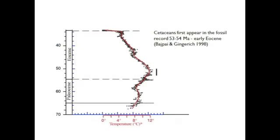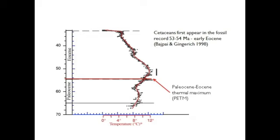Now that we know how to diagnose a cetacean, we can delve into the fossil record. Cetaceans first appeared 53 to 54 million years ago in the early Eocene, and indeed the oldest fossil evidence for most modern orders of mammals is also from this time. Climate-wise, this was the start of a warming trend marked by a series of hyperthermal periods — periods of geologically rapid warming. The first of these was at the Paleocene-Eocene boundary, known as the Paleocene-Eocene Thermal Maximum, or PETM, during which the mean surface temperature of the Earth rose by about 6 degrees Celsius, coincident with the diversification and high turnover of mammalian taxa.